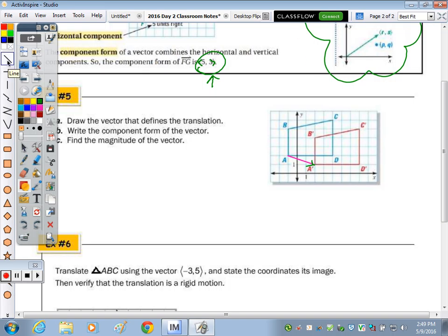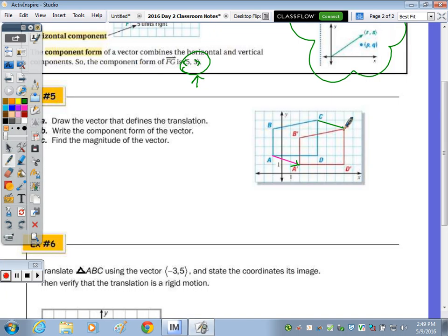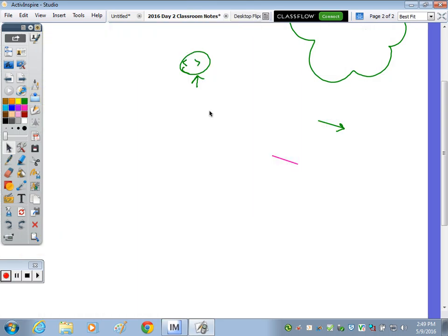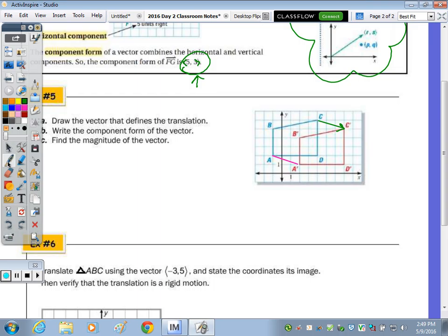You can do it from any point to its image. How about C to C prime? So there's part A. Part B is to write the component form. So for part B, using these symbols here, the horizontal shift is noted here. So how did we move? From C to C prime, it's right 1, 2, 3, down 1. So it's ⟨3, -1⟩.